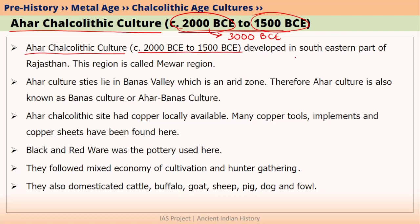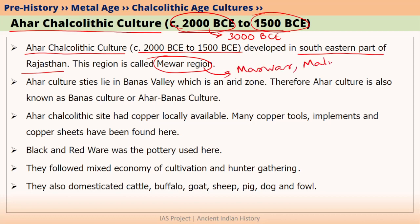The area of Ahar Chalcolithic culture was the south-eastern part of Rajasthan, and this area is called the Mewad region. You will also learn about the Mewad region, Marwad region, Malwa region, and other regions like this.